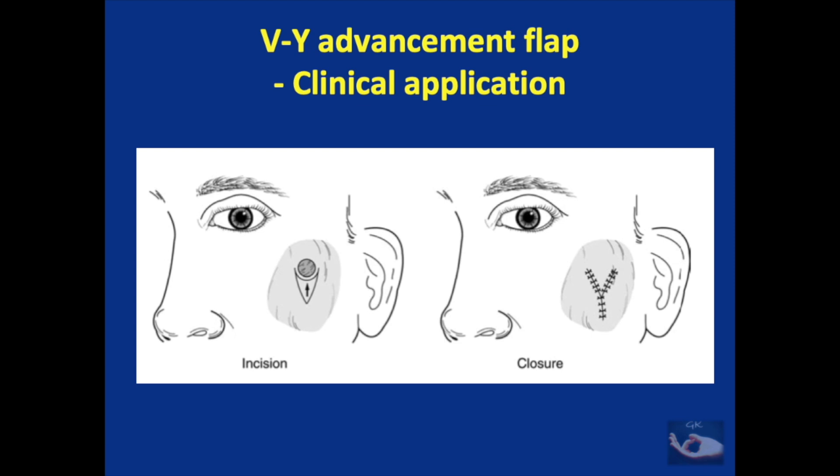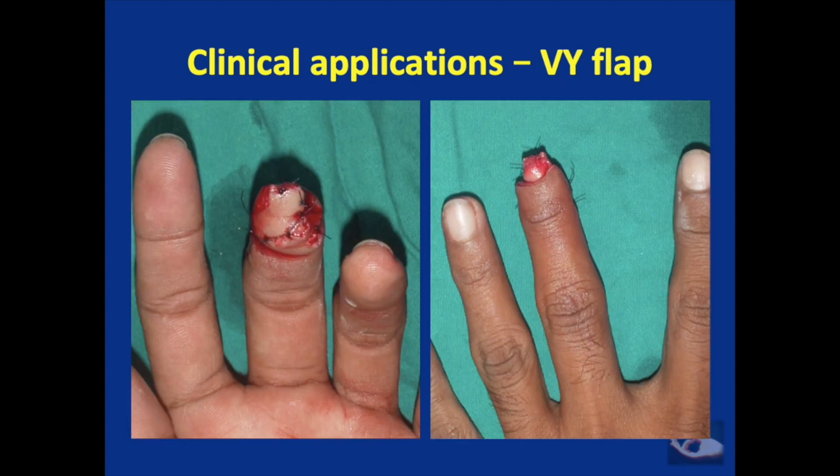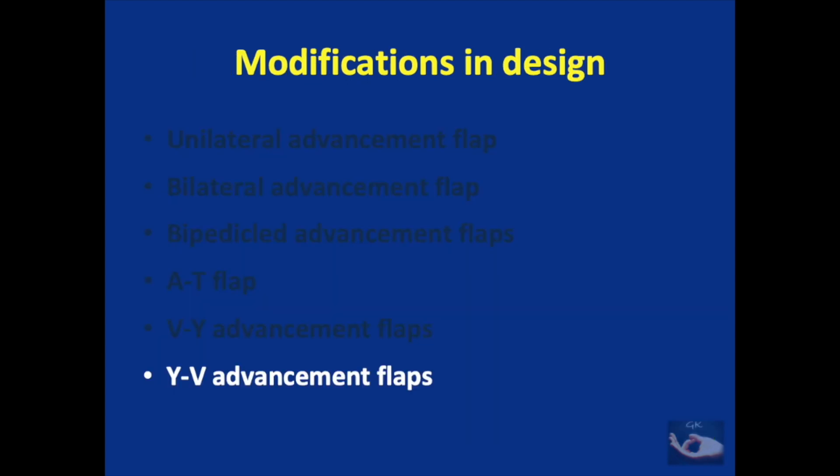The flap is also used widely in resurfacing fingertip injuries. This is an example of a V-Y flap done for resurfacing an amputation of the tip of the middle finger of the hand.